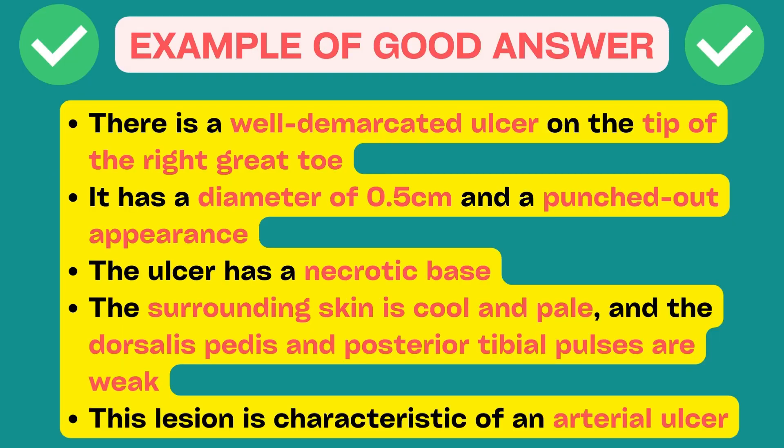Let me give you an A-plus answer. It goes like this: There is a well-demarcated ulcer on the tip of the right great toe. It has a diameter of 0.5 cm and a punched-out appearance. The ulcer has a necrotic base. The surrounding skin is cool and pale, and the dorsalis pedis and posterior tibial pulses are weak. This lesion is characteristic of an arterial ulcer.